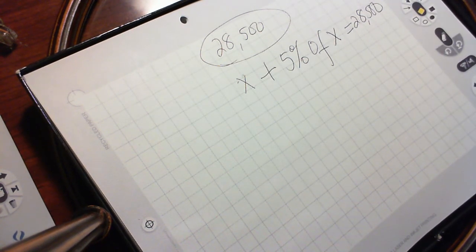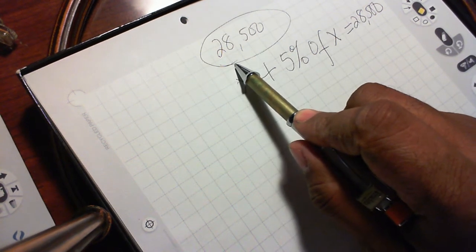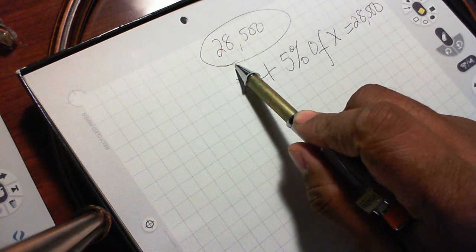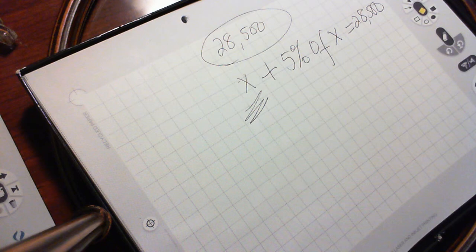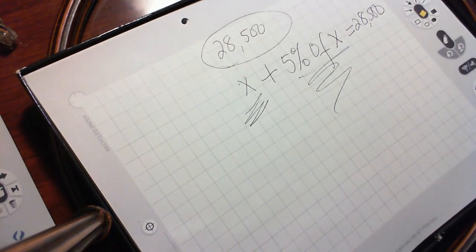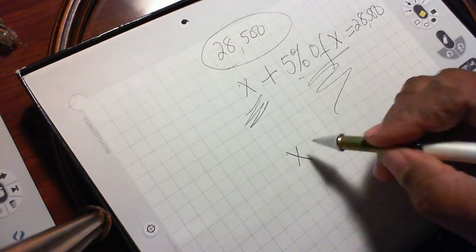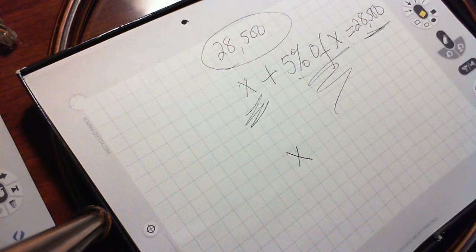So now what we need to do is, I hope you understand, this is the list price. They want us to find out what is the dealer cost. So we say, let the dealer cost be x. The markup is given to you as 5% of x. So we have x.